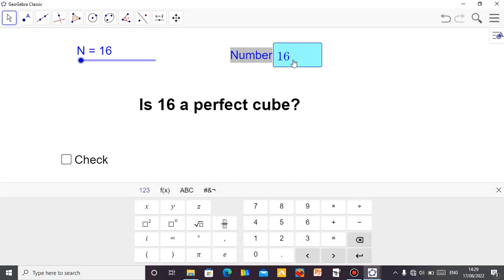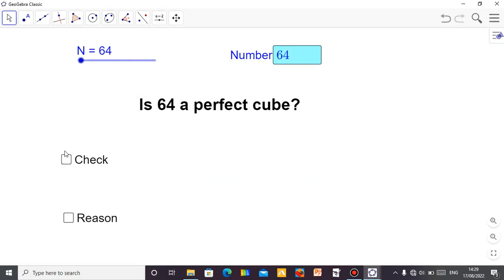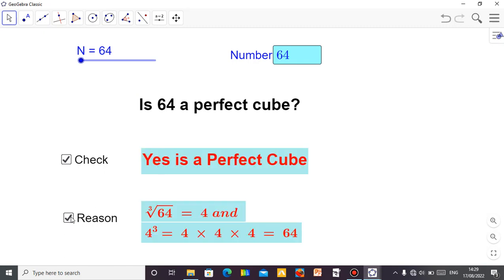Just like that. We know 64 is a perfect cube. If you try 64 and check, yes, it's a perfect cube. 64 is 4 times 4 times 4. Let's see it. 4 times 4 times 4 equals 64.